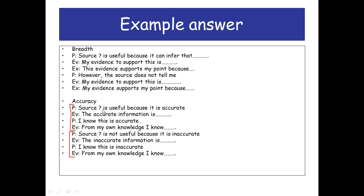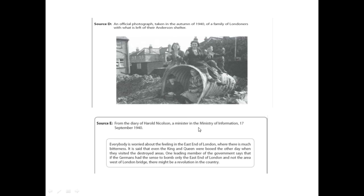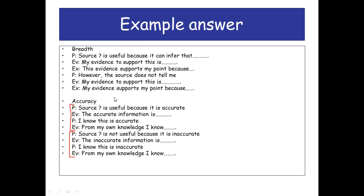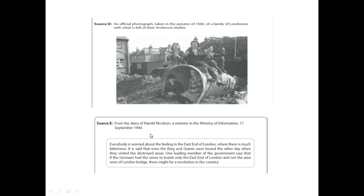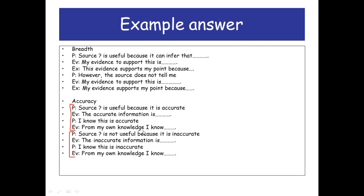For the inaccurate side: source D is not useful because it does contain some inaccurate information. The inaccurate information from the source is that it only shows happy faces or a happy attitude towards the given circumstances. From my own knowledge, I know this is inaccurate — not a lot of people were happy or had morale boosts when their house got bombed.